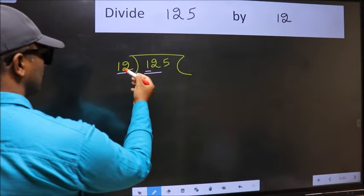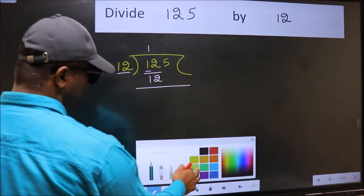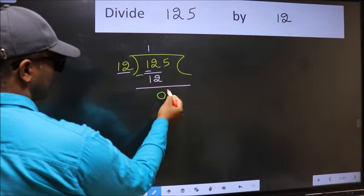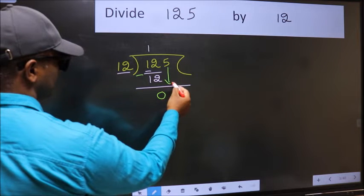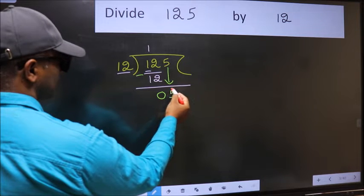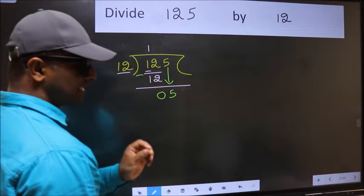When do we get 12 in the 12 table? 12 once is 12. Now we should subtract. 12 minus 12, 0. After this, bring down the beside number. So 5 down. After this step, the mistake happens. And the mistake is this.